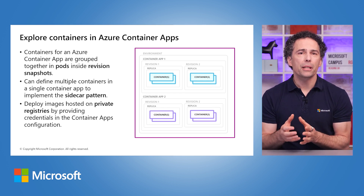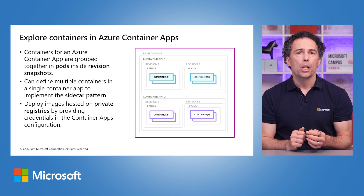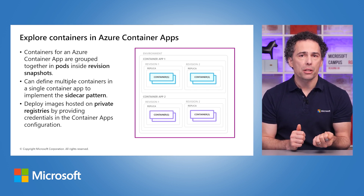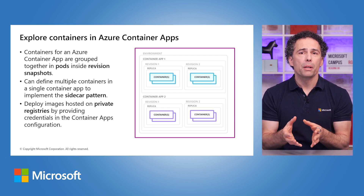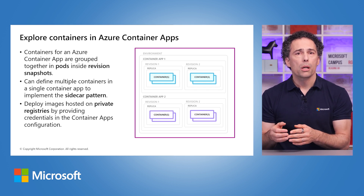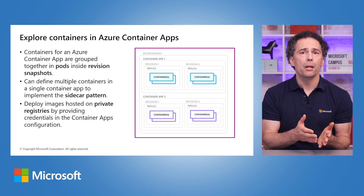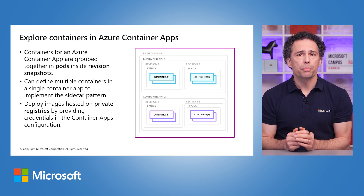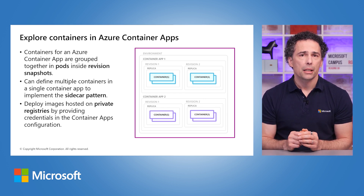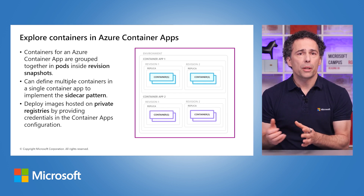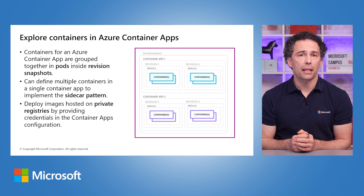A more complex scenario is to run multiple containers in one container app. For example, you might want to have an agent that accesses logs from the main app container on a shared volume and sends them to a logging service, or a background service that updates a cache used by the main app container on a shared volume. This would be an example of using the sidecar pattern. To use images from private registries, you need to provide the credentials in the container app settings.